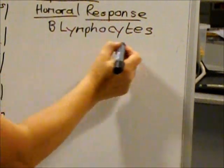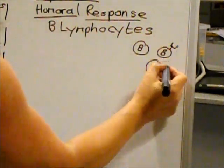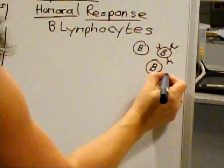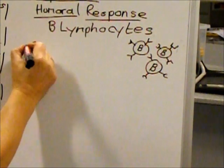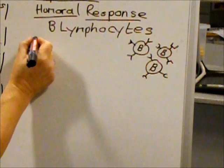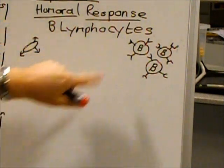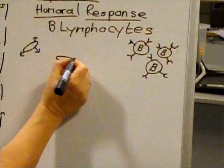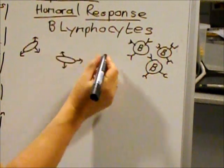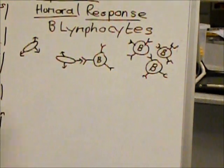Just like T lymphocytes, there is a whole host of different B lymphocytes in your blood plasma, and they differ in the shapes of the receptors on their cell surface membranes. When a B lymphocyte encounters a pathogen or any non-self antigen in the blood, a B lymphocyte with complementary receptors will bind to it — almost like a handshake. This binding activates the B lymphocyte.